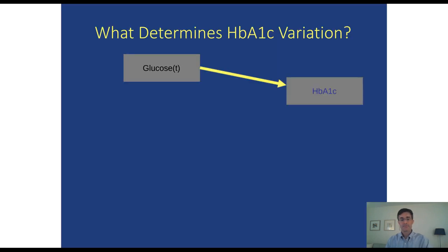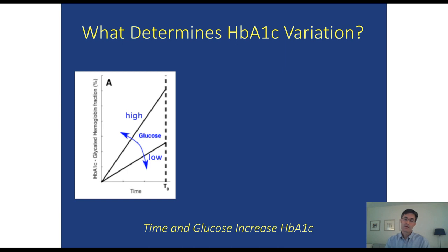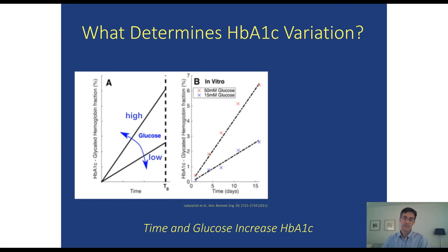As we said from the beginning, the recent glucose concentration determines A1c. There's solid evidence that RBC age variation — the mean red blood cell age, or MRBC — also influences A1c. We can compare the effects of increasing glucose and increasing red cell age simultaneously. When glucose is high and cells are allowed to age longer, A1c becomes much more elevated. When glucose is low, time still has an effect, though more shallow. Evidence both in vitro and in vivo supports this relationship.